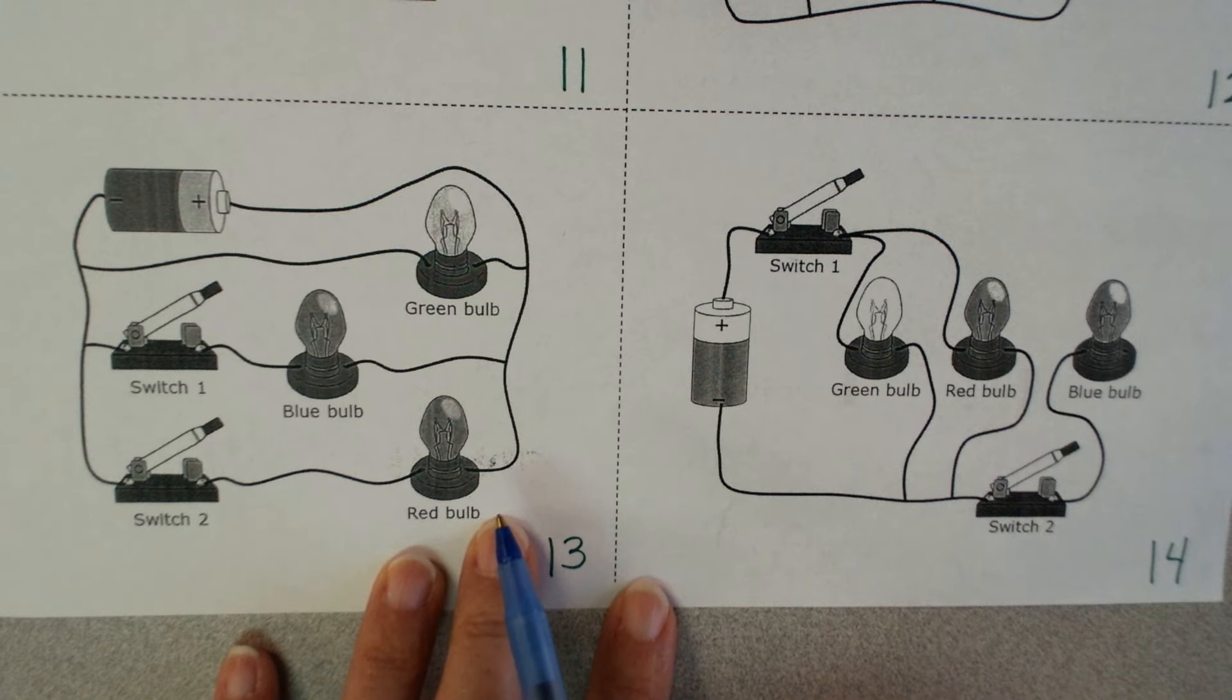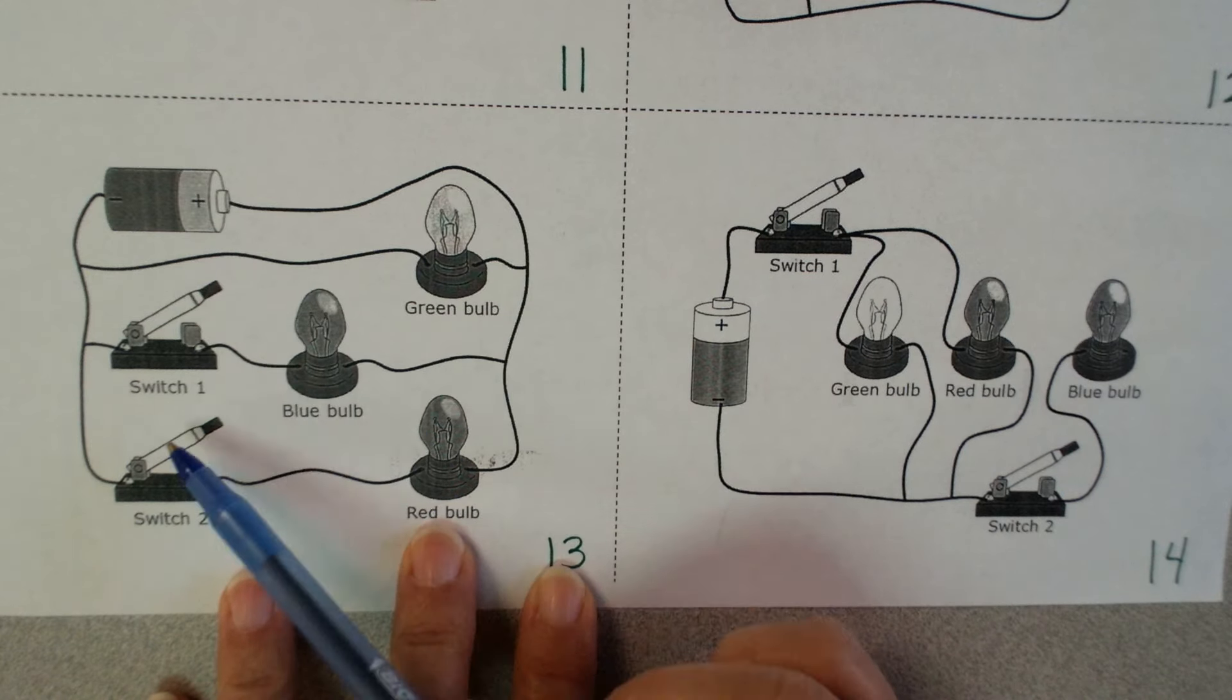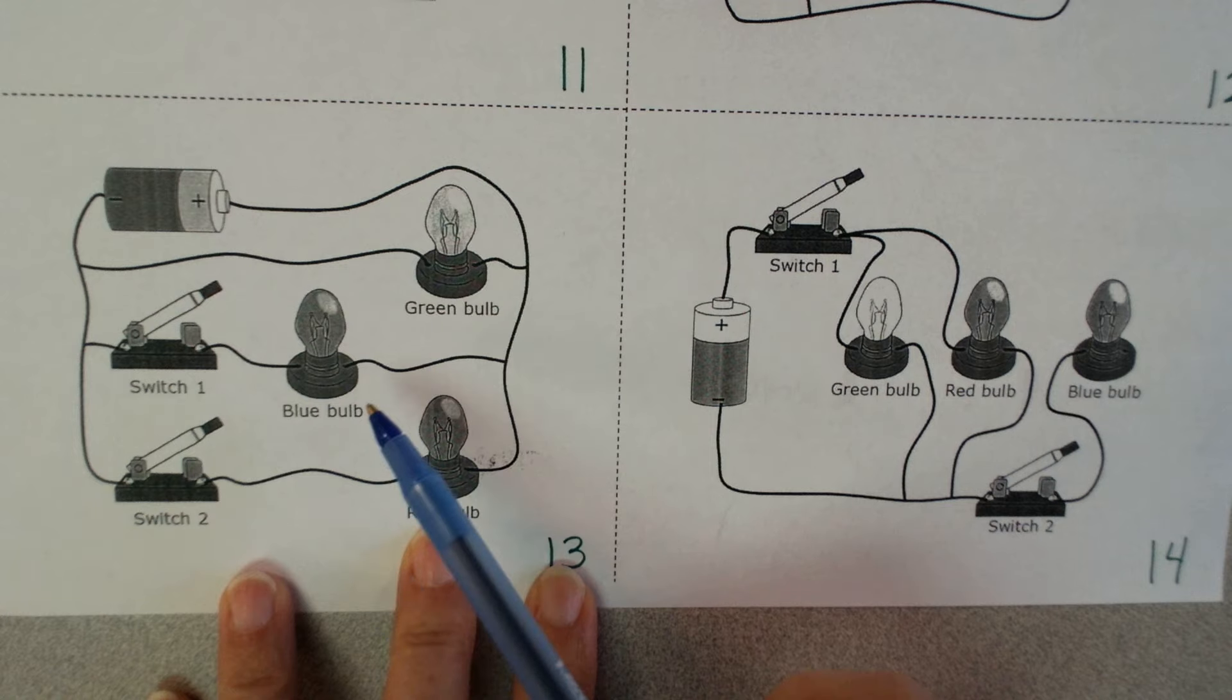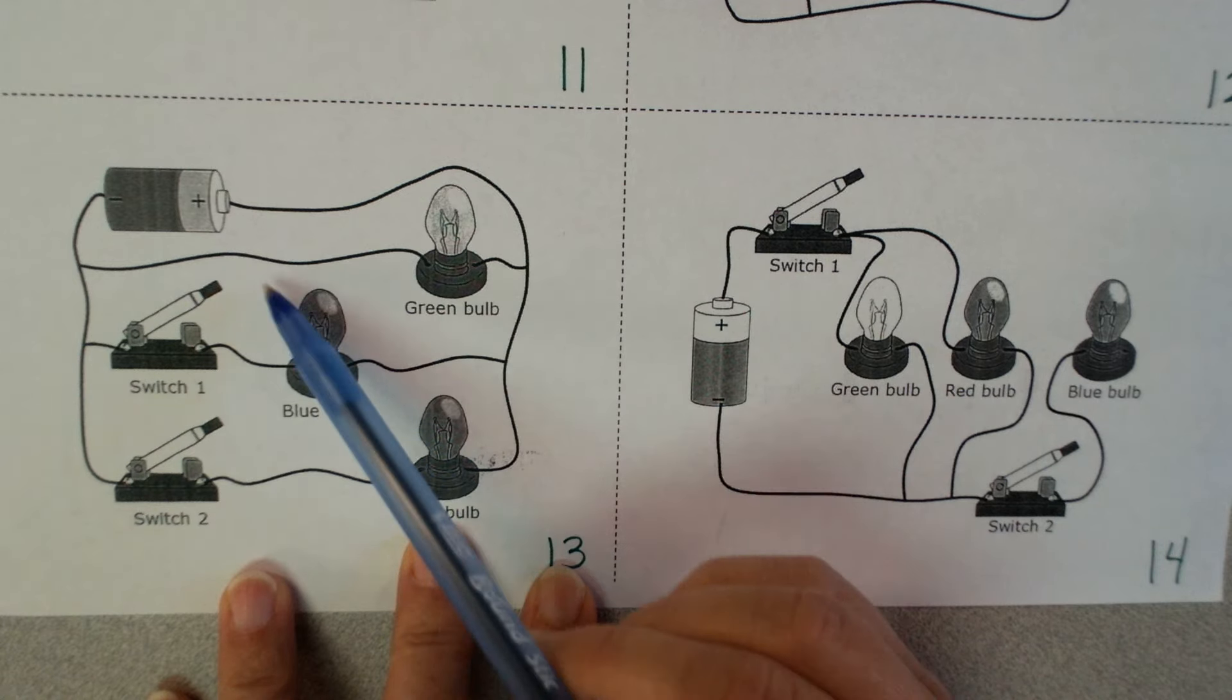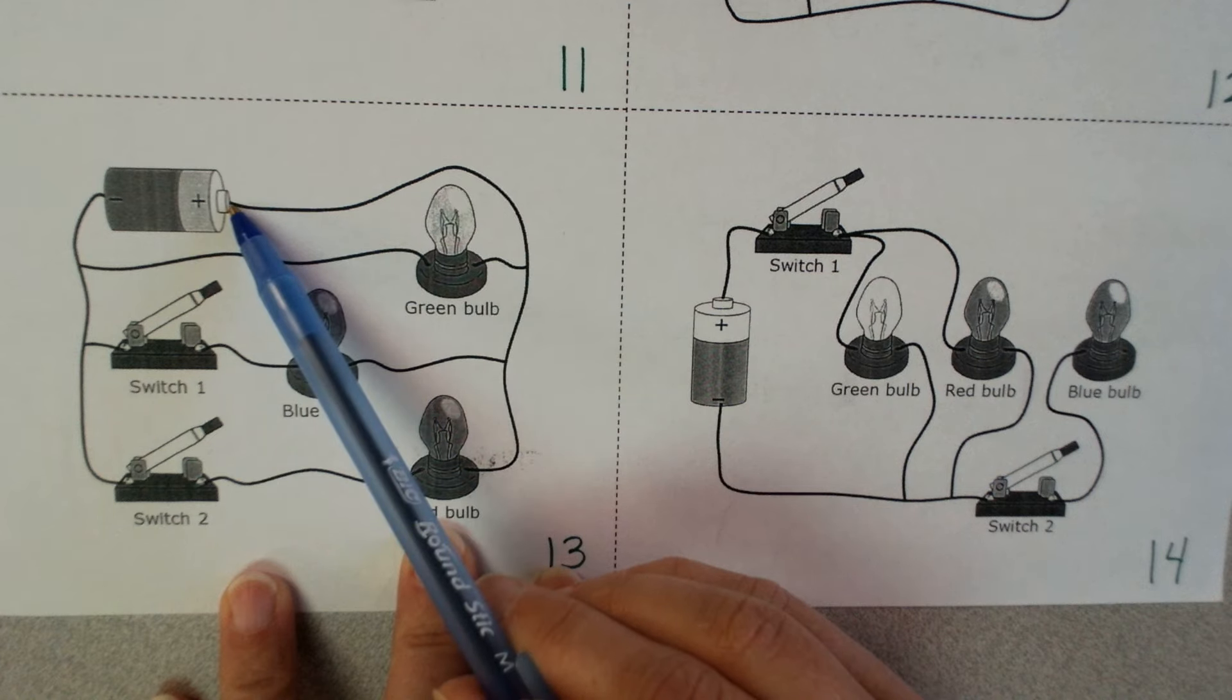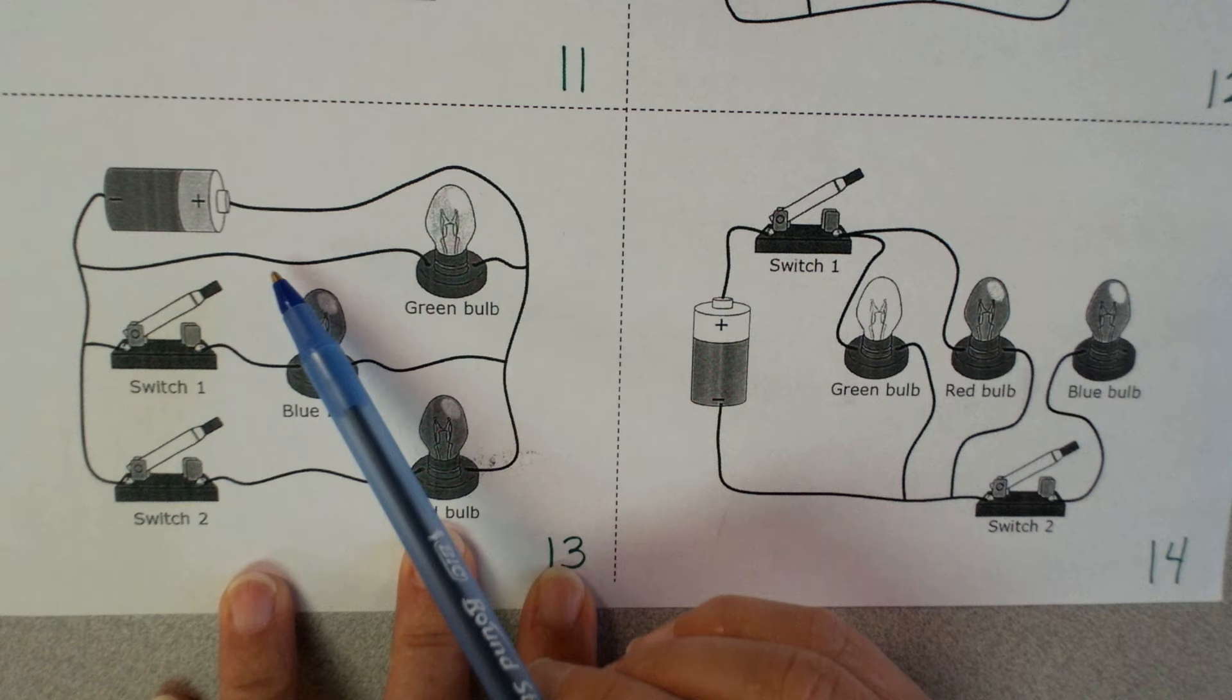So let's take a look down here at these bottom two. So first question, series or parallel? I see more than one loop in both of these, and then I also have some switches. So you're always going to have these scenarios that you're given. They're going to say, if you close switch one, which bulbs are always going to be lit? So in this first example, I see green is always going to be lit. It's on a complete pathway always.